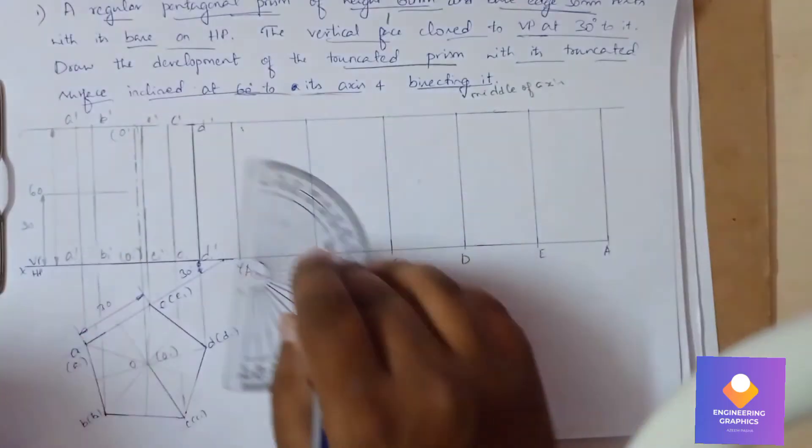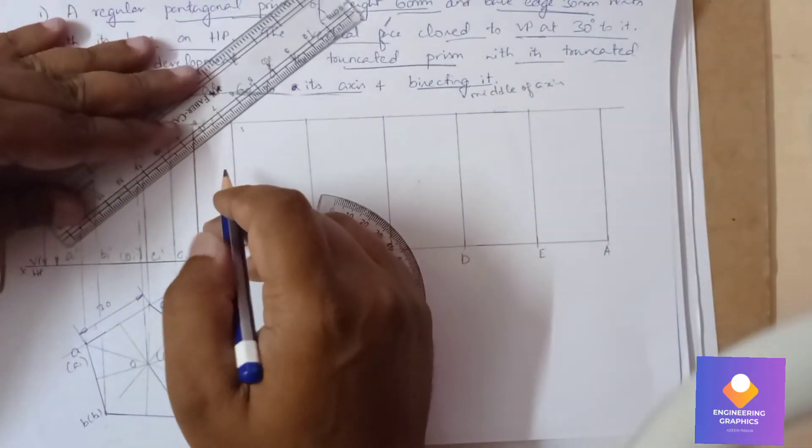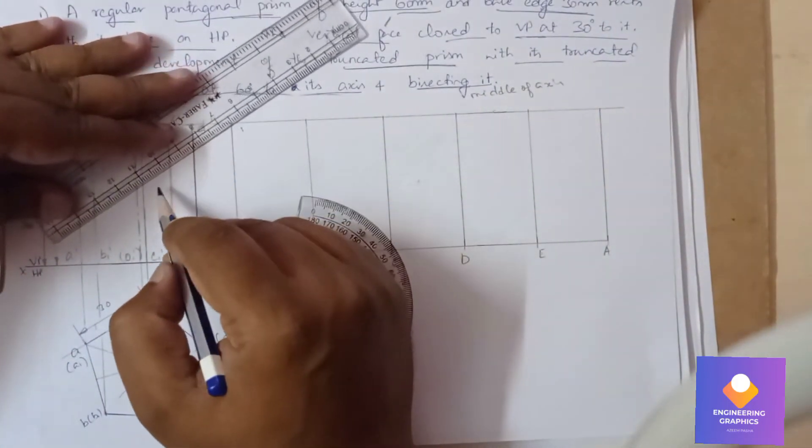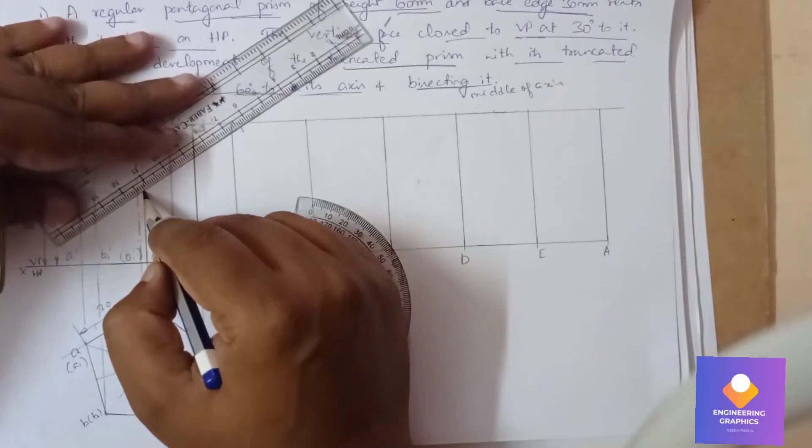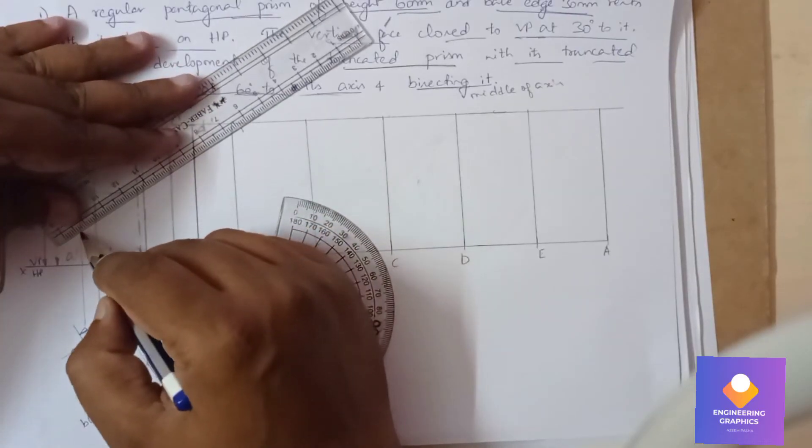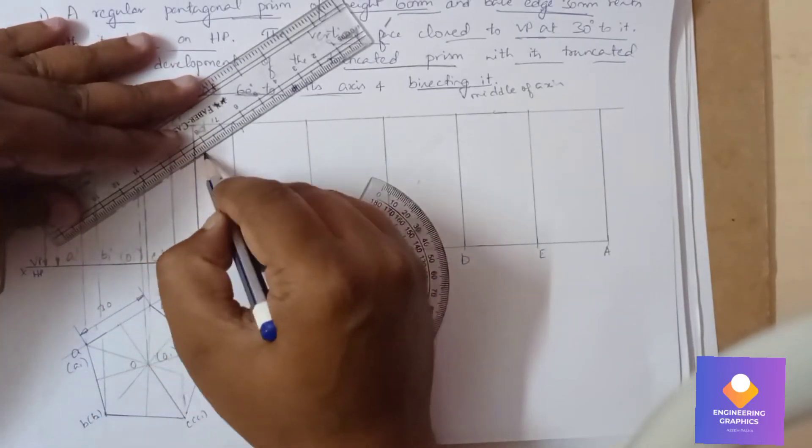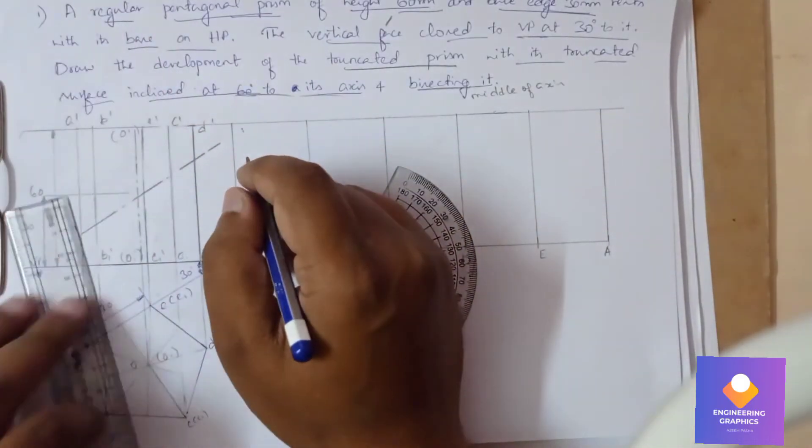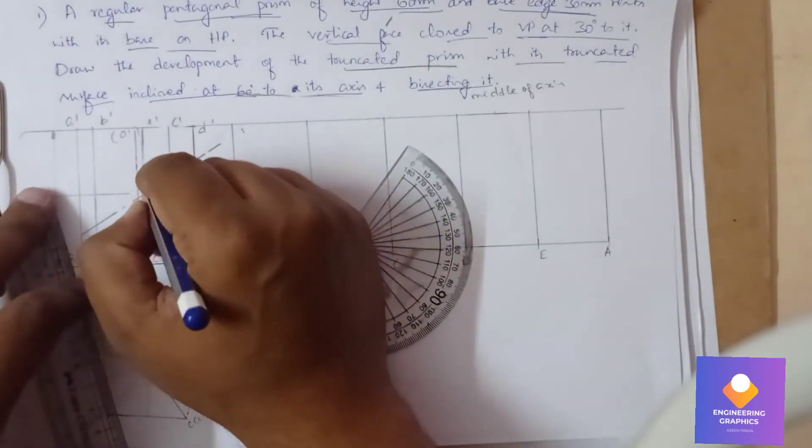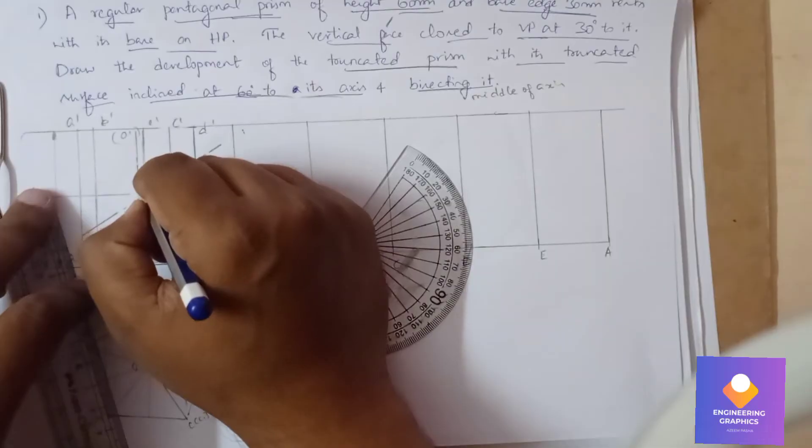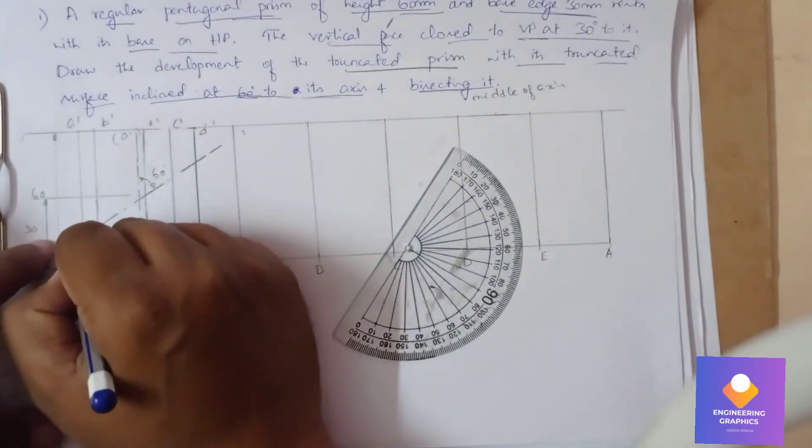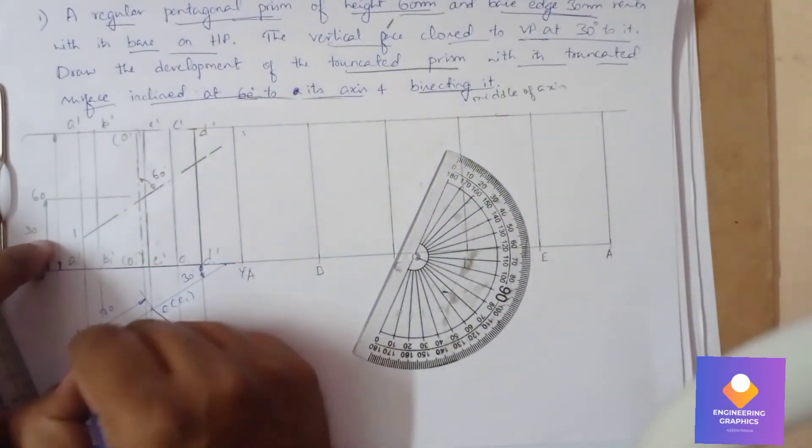From that axis point, the truncated surface, we need to consider an angle of 60 degrees—a little bit different. We can show the angle from the axis to the truncated surface. You can mention the naming now where the section plane is cutting it: 1, 2, 3, 4.